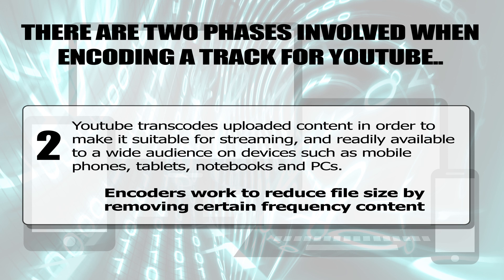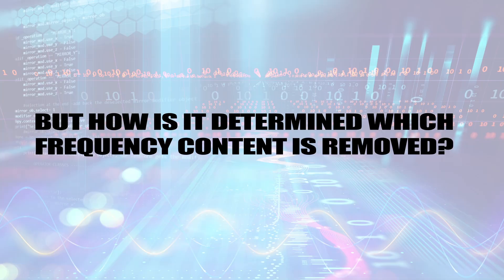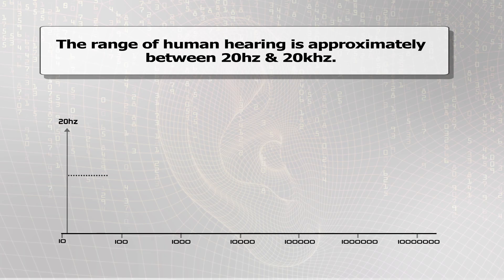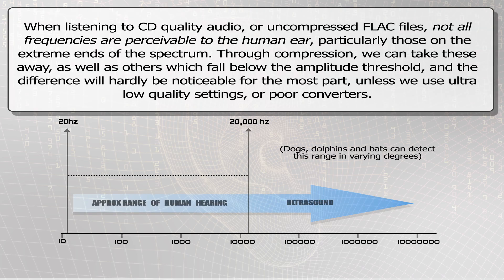Encoders work to reduce file size by removing certain frequency content. But how is it determined which frequency content is removed? The range of human hearing is approximately between 20 Hz and 20 kHz. When listening to CD quality audio or uncompressed FLAC files, not all frequencies are perceivable to the human ear, particularly those on extreme ends of the spectrum. Through compression, we can take these frequencies away as well as others which fall between the amplitude threshold, and the difference will hardly be noticeable for the most part, unless we use ultra-low quality settings or poor converters.